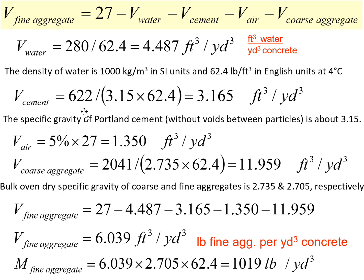Similarly, we can calculate the volume of cement, which is equal to the mass of cement divided by the density of cement. We don't directly know the density of cement. What we know is the specific gravity of Portland cement, which is approximately 3.15, and specific gravity equals the density of cement divided by the density of water at 4 degrees Celsius. So the density of cement is the specific gravity times the density of water, and the volume of cement is the mass of cement per cubic yard divided by the density of cement, giving us 3.165 cubic foot of cement per cubic yard of concrete.